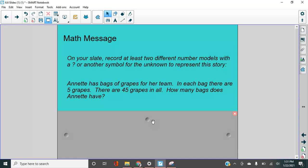All right. If she's on a football team or a baseball team or a soccer team, that's fine. Just make sure you can see her. In each bag, there are five grapes. Okay. So the bags have five grapes. There are 45 grapes in all. How many bags does Annette have? So what we need to think about first is what do we not know? Here's the word unknown, right? Un-meaning not, not known. In this problem, what do we not know?